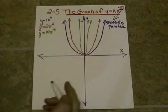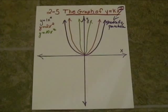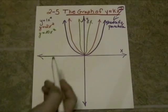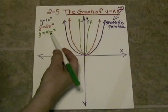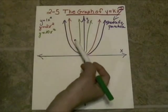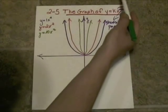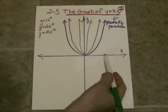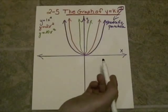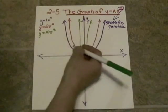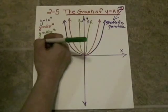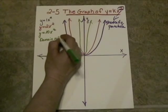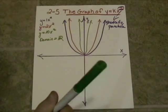Now let's talk about the domain and the range. Your domain can be anything — the x values, which are your independent variable, can be anything here. Because these arrows continue on forever and the parabola ultimately gets wider and wider, you can have lots and lots of different x values. So the domain for these graphs is equal to the set of all real numbers.